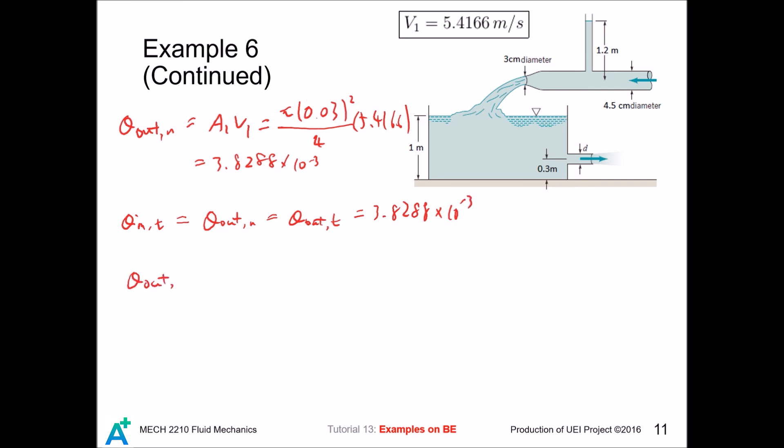The flow rate out of the tank equals A0 equals pi times d squared divided by 4. We haven't determined the velocity. The velocity is just the velocity of free jet and the depth of water above it is 0.7, so that is square root 2gh. And that becomes this value. So we can plug it in and then we can solve for D.